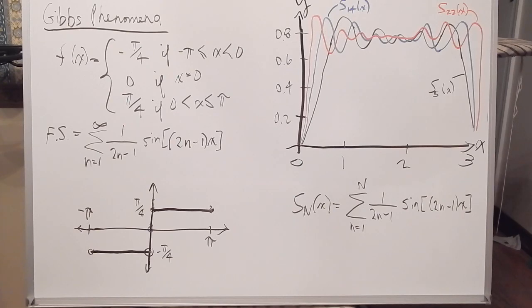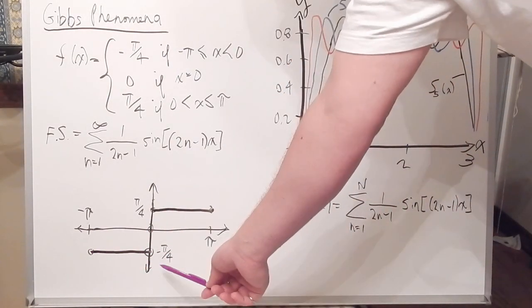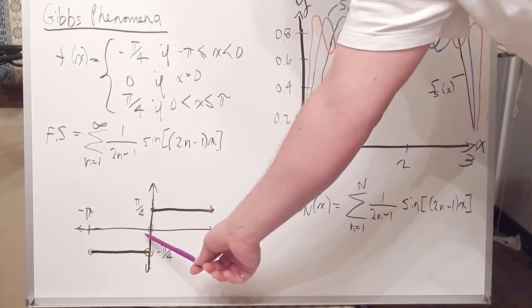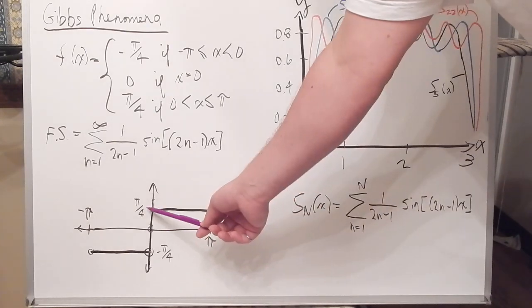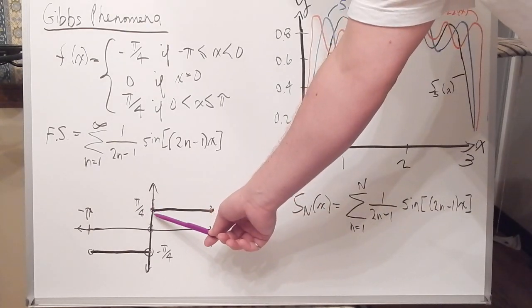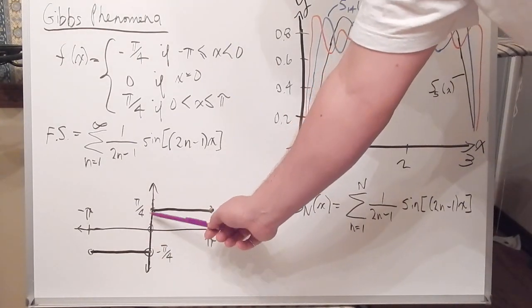Here's where x is negative pi over 4 between negative pi and zero, and x is pi over 4, and y is pi over 4 when x is between zero and pi. And we have our discontinuity here.